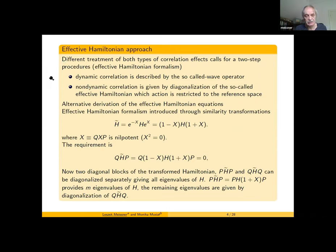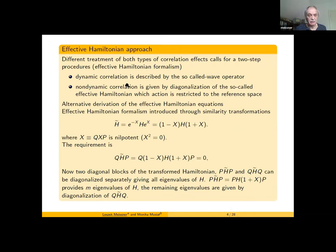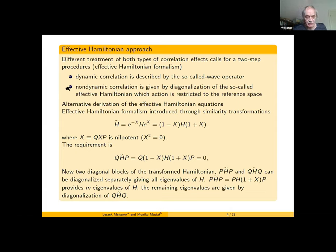If we have the same treatment of both types of correlation effects — as in multi-reference CI — then the effective Hamiltonian approach is not necessary. But if we have a different description of dynamic and non-dynamic correlation effects, then we have to use the so-called effective Hamiltonian formalism, where dynamic correlation effects are described by the weight operator and non-dynamic contributions are given by diagonalization of the effective Hamiltonian.